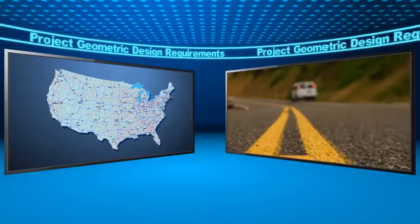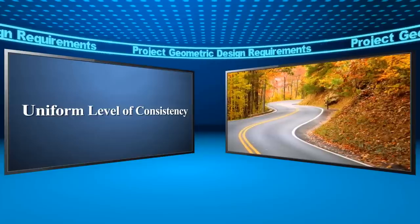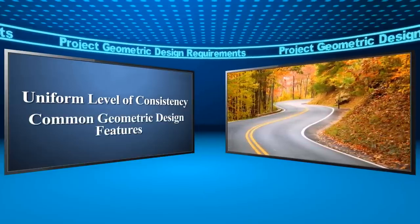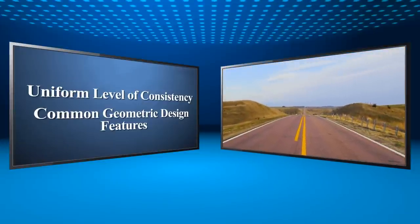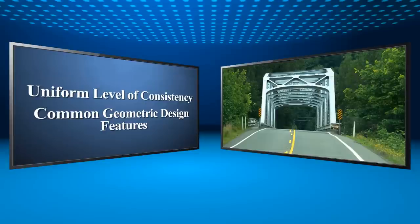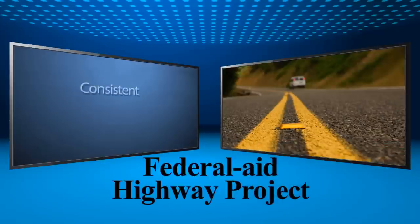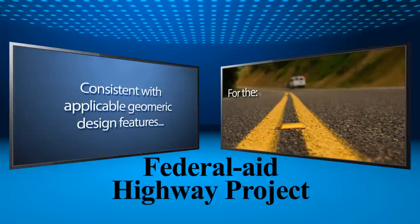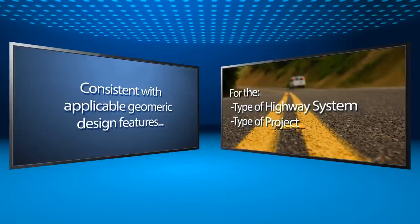Agencies at all levels of government are responsible for providing motorists a nearly uniform level of consistency by building and maintaining our nation's roads to a common set of geometric design features. These design features establish the physical aspects of our roadways, like the sharpness of a curve or width of a lane. You, as a local public agency, or LPA, are responsible for developing your federal aid project consistent with the applicable geometric design features for the type of highway system and type of project. Applying the appropriate geometric design features helps ensure the safe accommodation of traffic and freight while serving our nation's strategic and economic priorities.